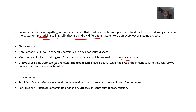Regarding the life cycle: they exist as trophozoites and cysts. The trophozoite stage is the active form, while the cyst is the infectious one that can survive outside the host for several months.